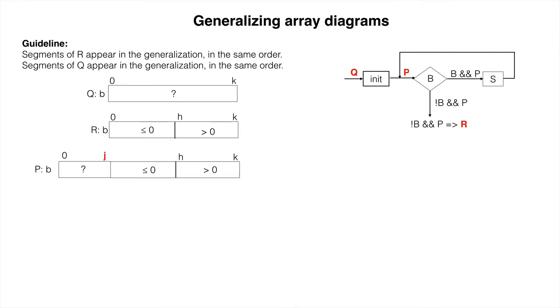We could also have placed j to the right of the line. As you gain experience developing the loops, you will learn which one may be slightly better.